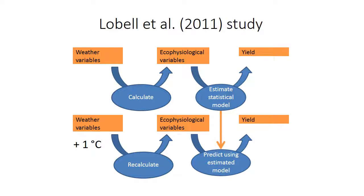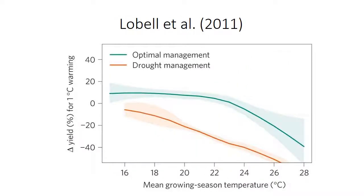Weather variables and eco-physiological variables are calculated. By calculating these two and estimating the statistical model, yield can be calculated. In variable or changing weather conditions, recalculation of weather variables and eco-physiological variables helps in predicting the estimated model for yield. This is how optimal crop management conditions are graphically represented, showing yield in different environmental conditions with different temperatures or elevated conditions.